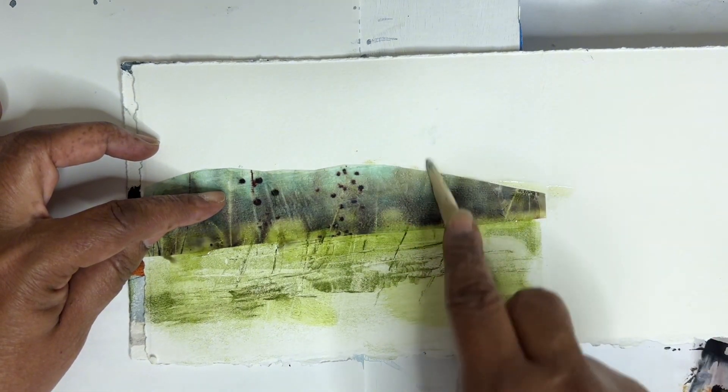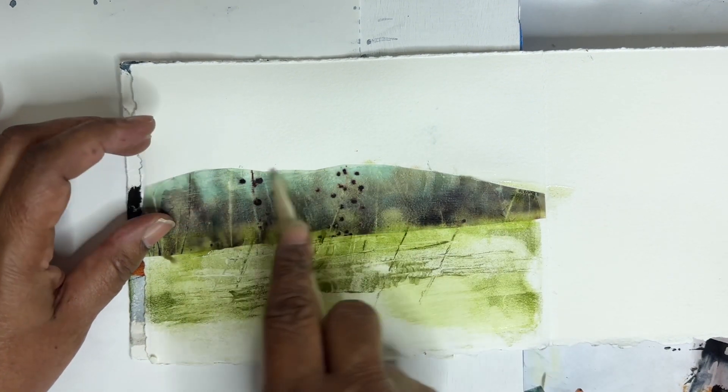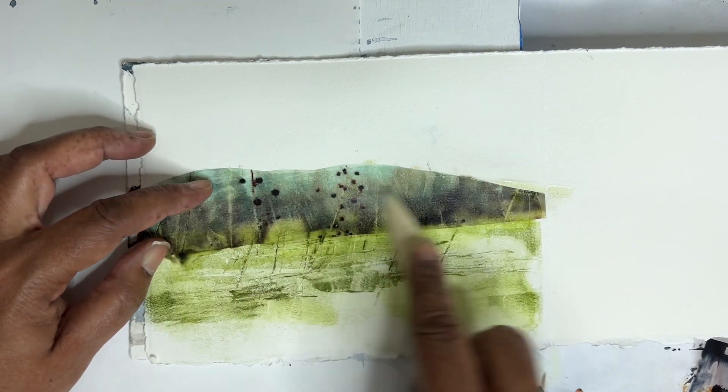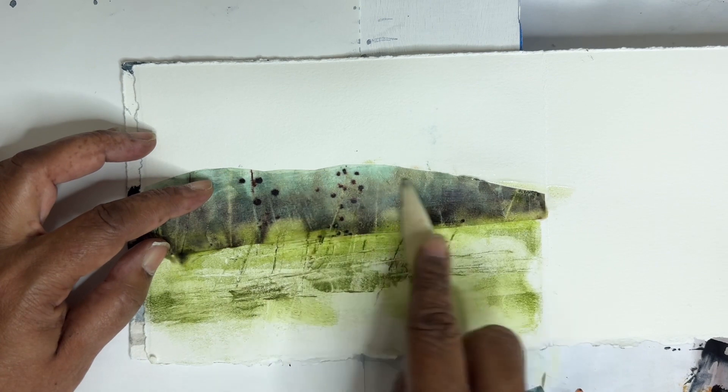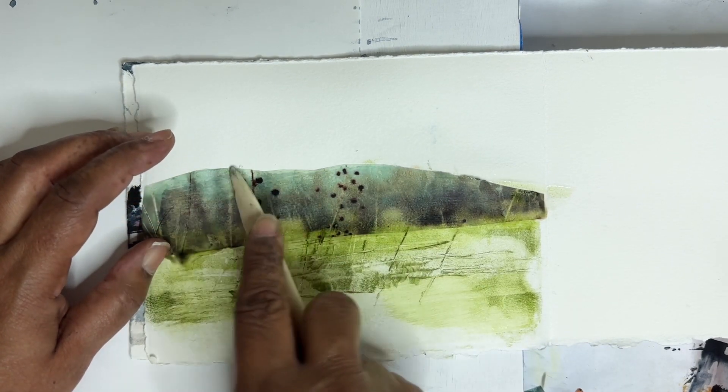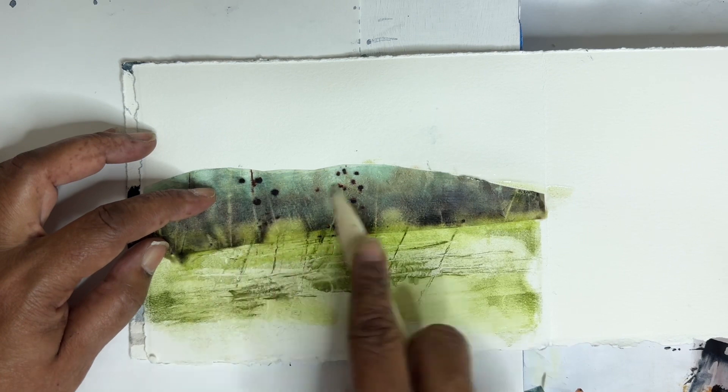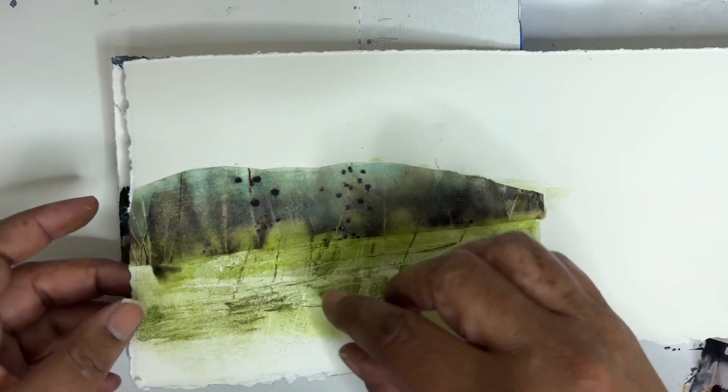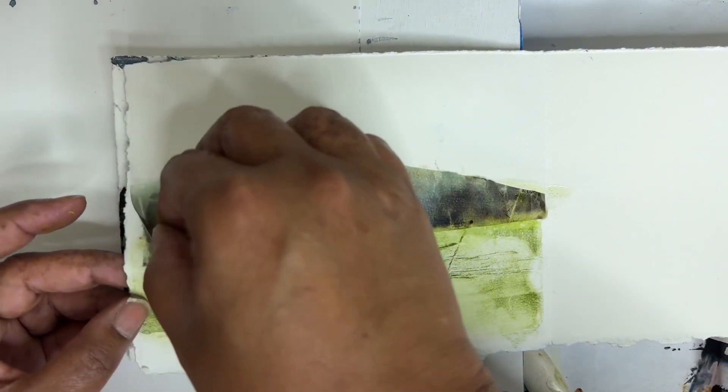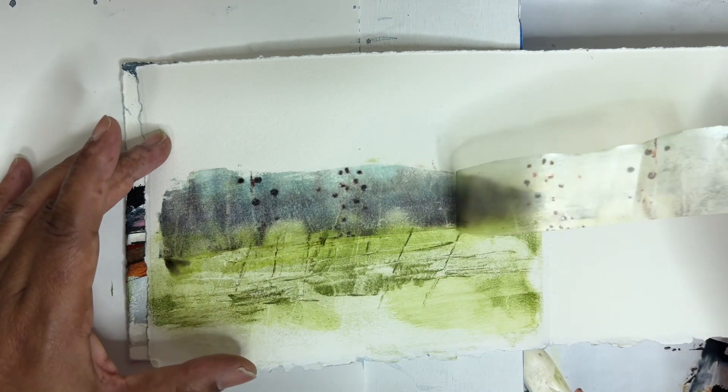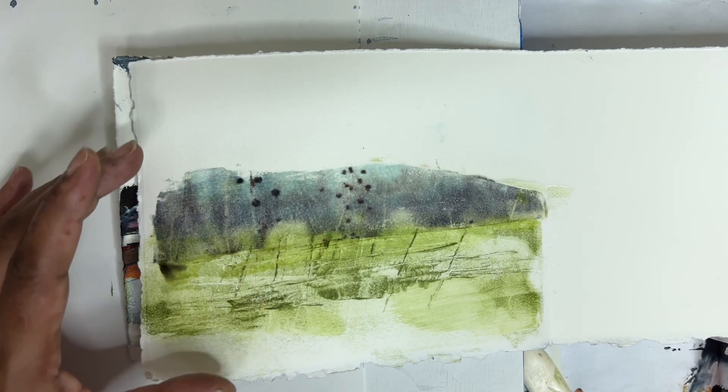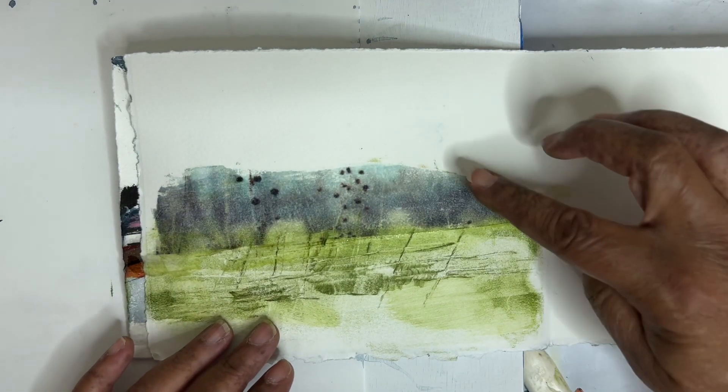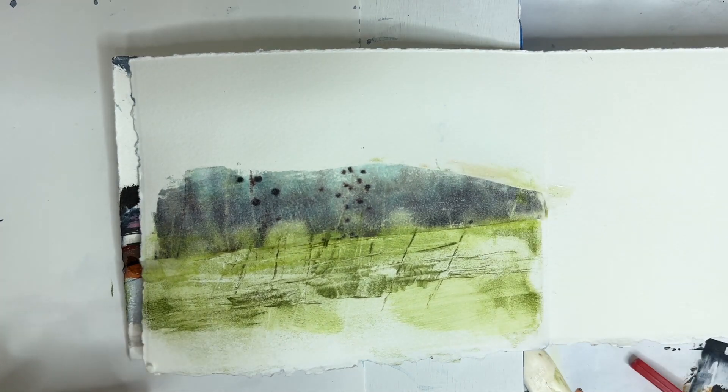I wonder what happens if I intentionally press some lines in there. Are you guys trying this technique? Have you tried it yet? I've been loving it. I'm probably using it too much, but I'm really in love with it. Let's see what we got. Print it over, just a little bit over that green. That's kind of a nice effect. Not some smudgies, but okay.